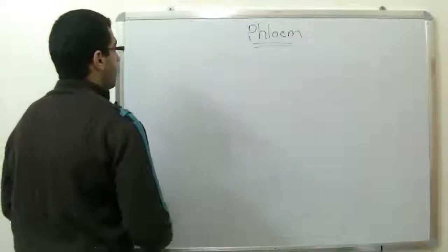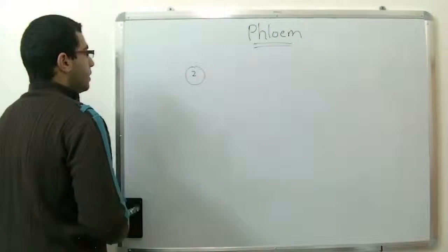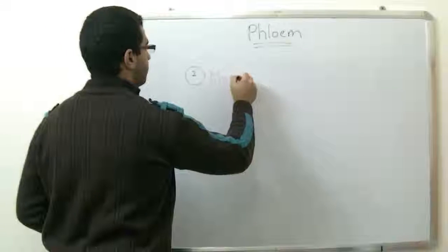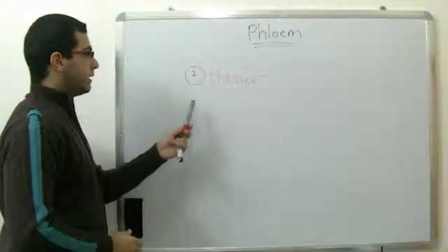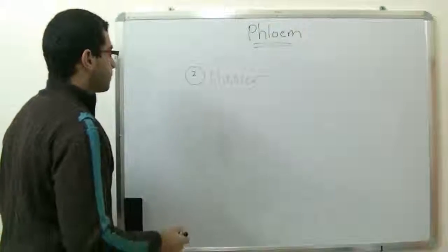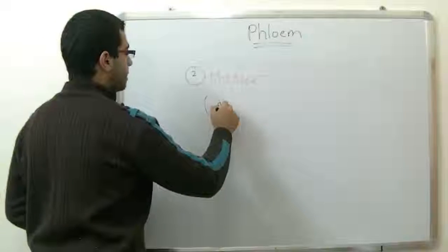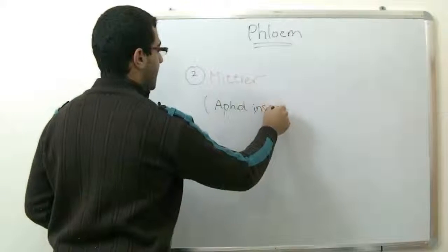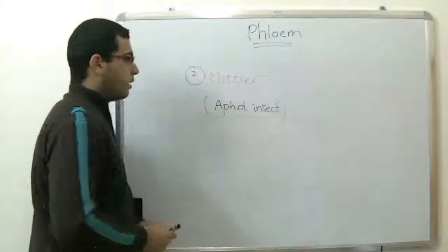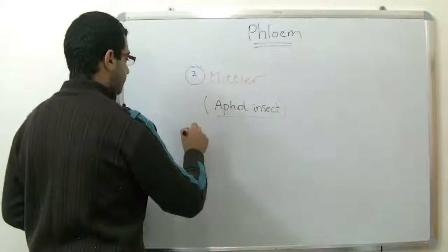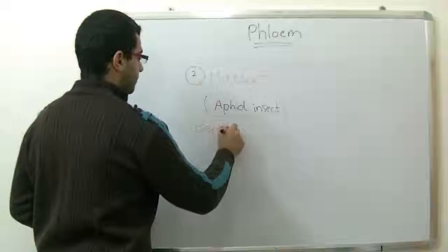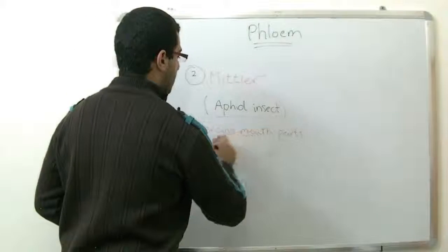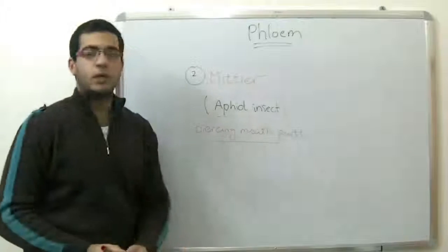The second point is the effort of the scientist Mettler. What this scientist did is using an insect called the aphid insect, as this insect used its piercing mouthparts to get its food from the plant.